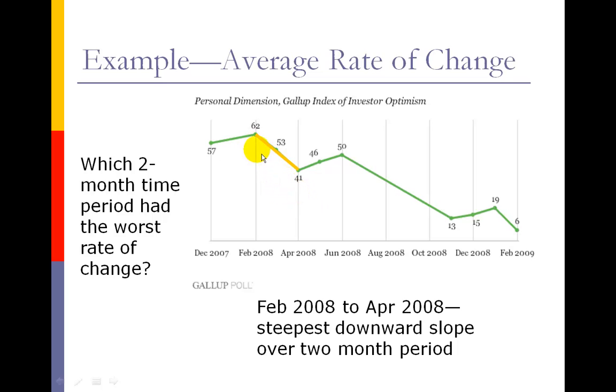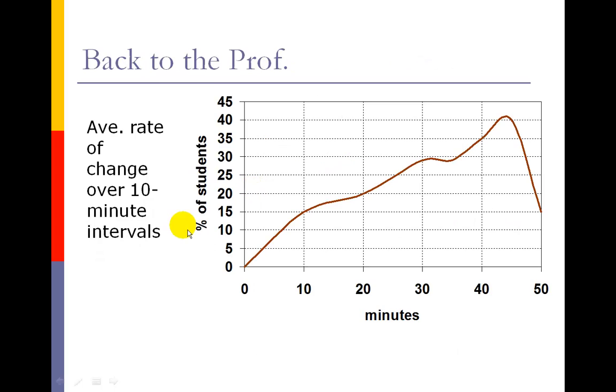So just playing around with our average rates of change, I'm going back to that example I showed in part one where students are falling asleep in this professor's class. In the previous part, I've been arguing how the professor could defend themselves, and now I want to take the other perspective of how the students could convince the Dean that things are not great.